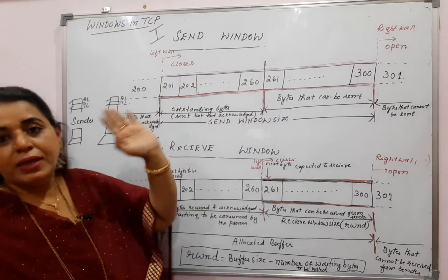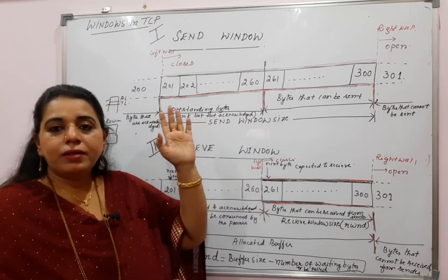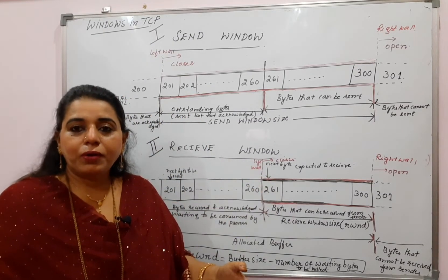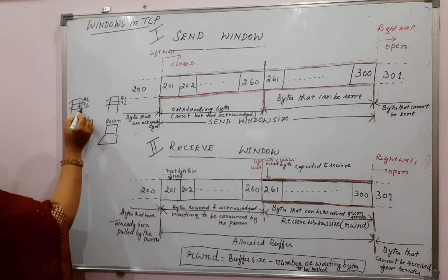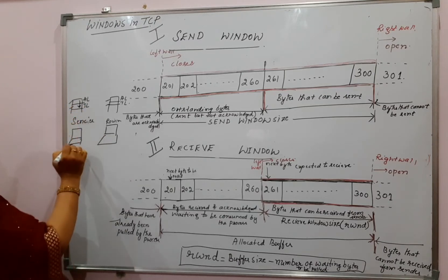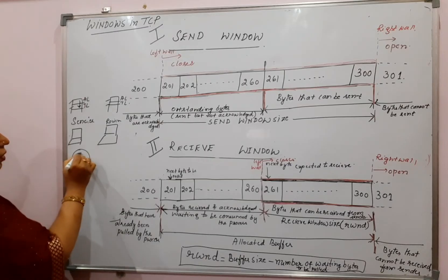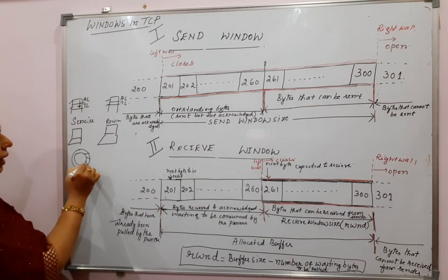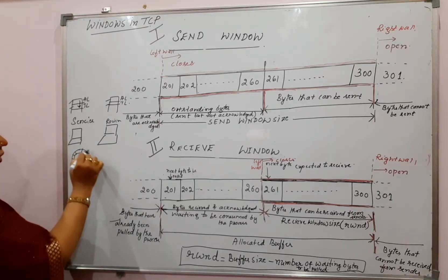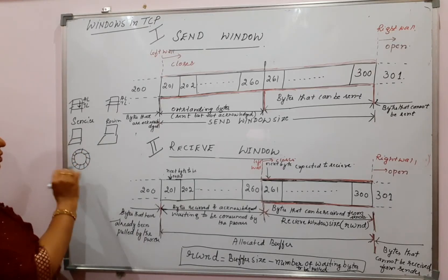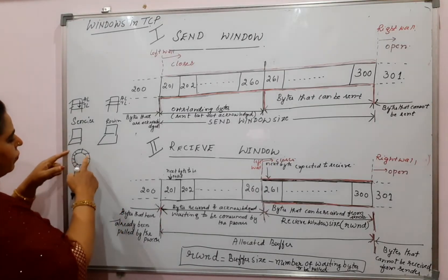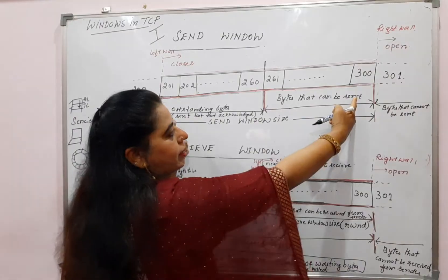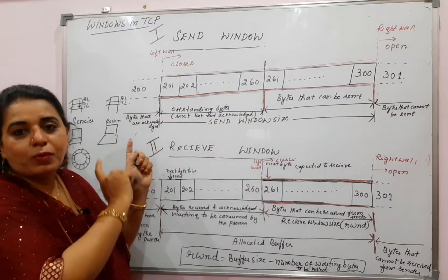Now let us look at the send window. The send window is the window size at the sender. When the sender is receiving bytes from the application layer, the transport layer maintains a buffer to store all the bytes. I have shown you in my previous video session that it maintains a buffer shown as a circular array where each location holds a byte. Here I am showing it in linear form — that is the buffer.